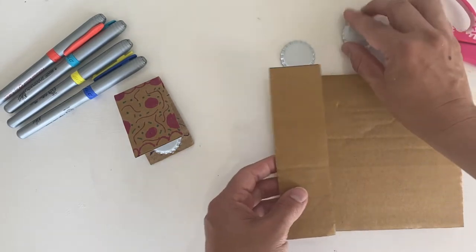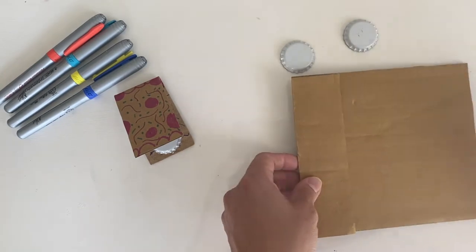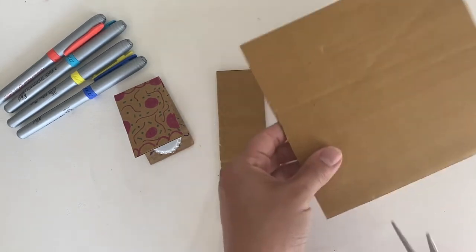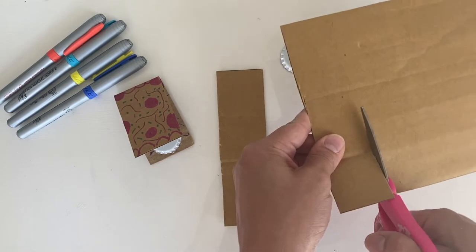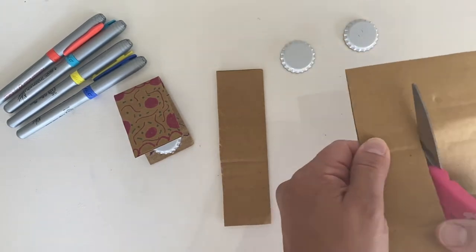So go ahead, find that width, and then you are going to just simply cut it straight out of your cardboard. Cut a straight line all the way down.